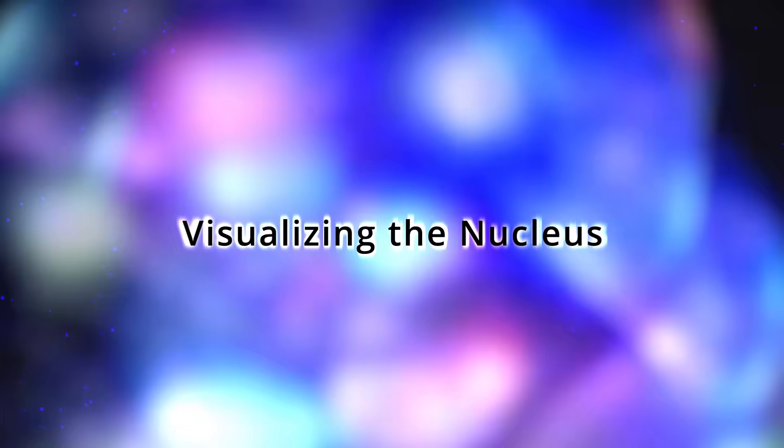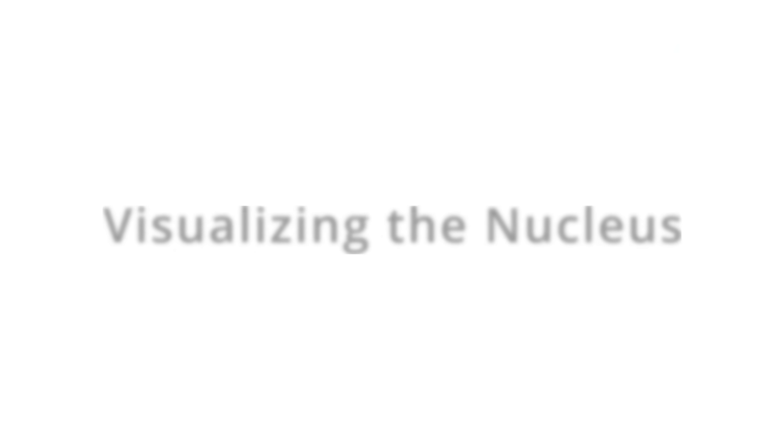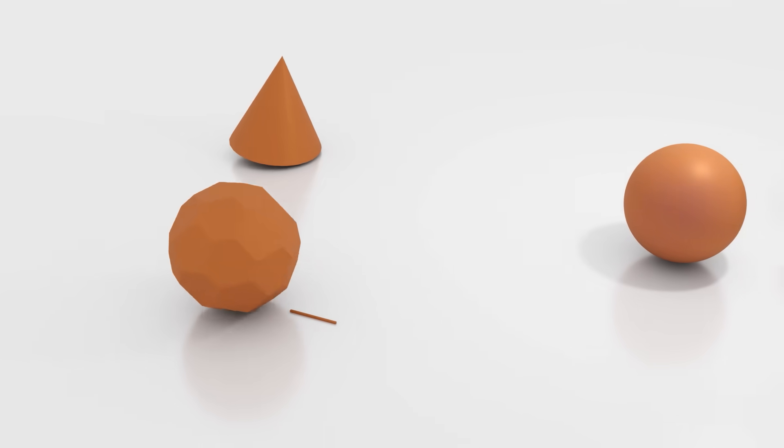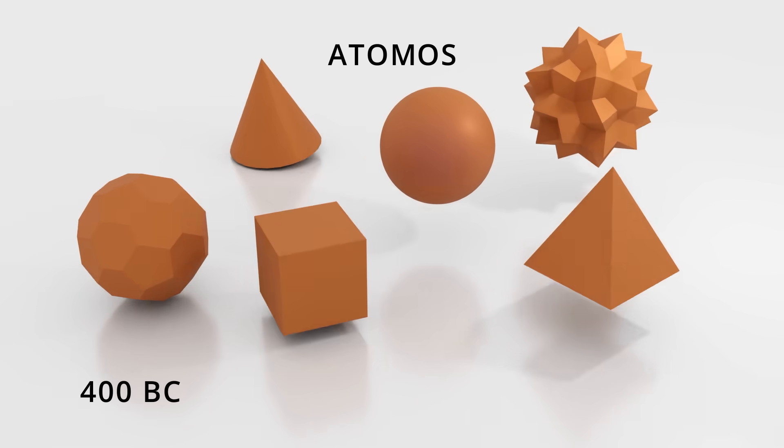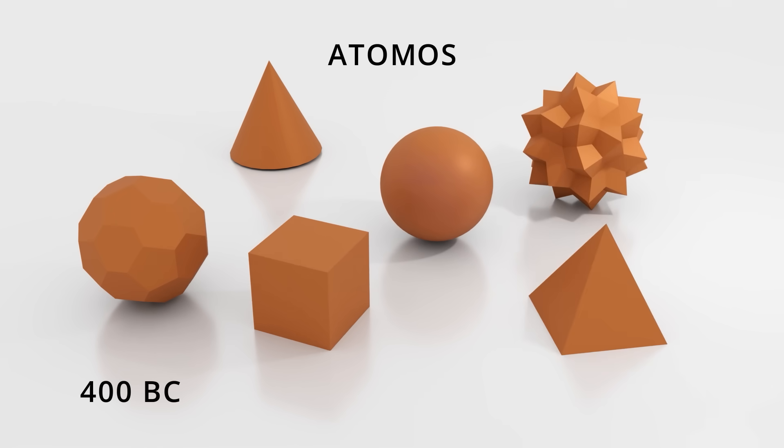Humans have long wondered about the structure of matter and what makes up our world. The Greek philosopher Democritus first developed the concept of atomos, an indivisible building block of matter. He believed it came in many shapes, depending on what kind of matter it made up.